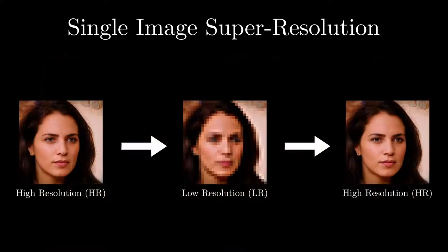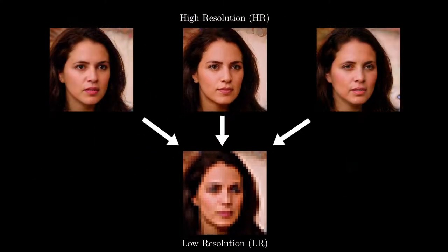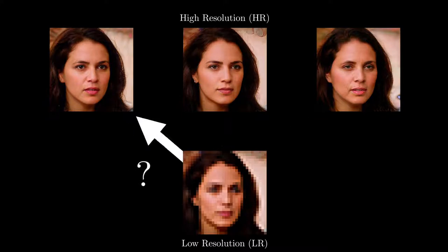Most super resolution algorithms assume that there's a true HR image that downscales to the input LR image, and then try to recover that true HR image. However, there could be many HR images that downsample to that same LR image. These methods try to match this true HR image on average on a per-pixel basis, but because they can't be sure where detail should go, they avoid adding them and smooth out detailed areas.